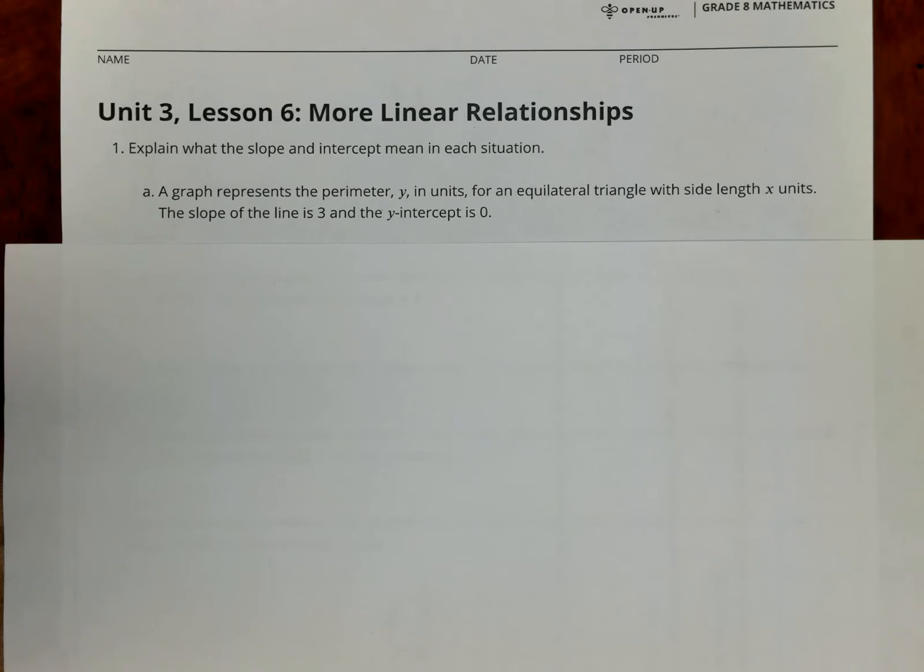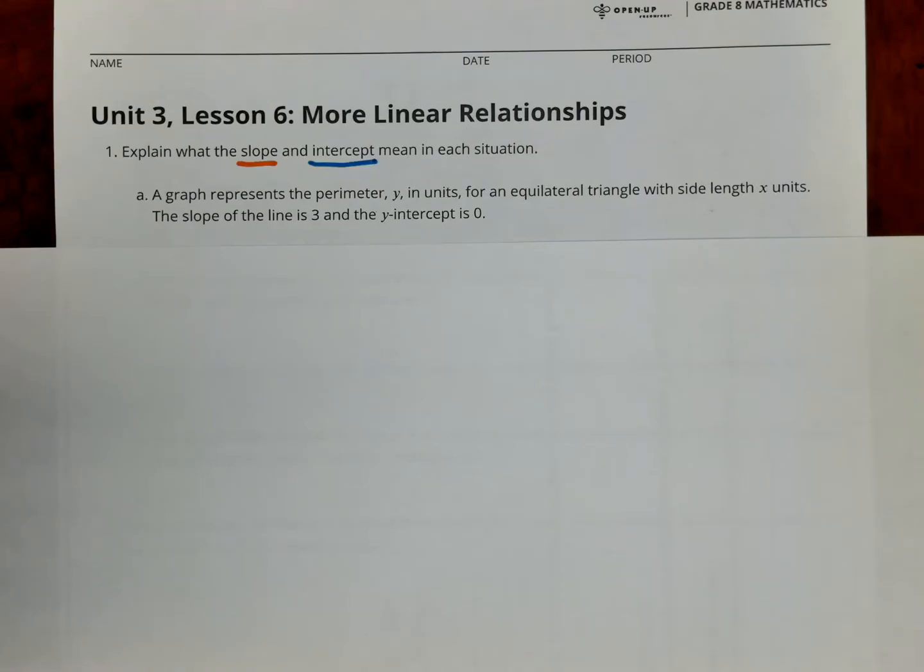So number 1, it says explain what the slope and intercept mean in each situation. The words for slope here, we're going to do in orange, and the stuff for intercept, we're going to do in blue. So we'll read part A and understand what it's saying here. A graph represents the perimeter y in units for an equilateral triangle with side lengths x units. The slope of the line is 3, and the y-intercept is 0.